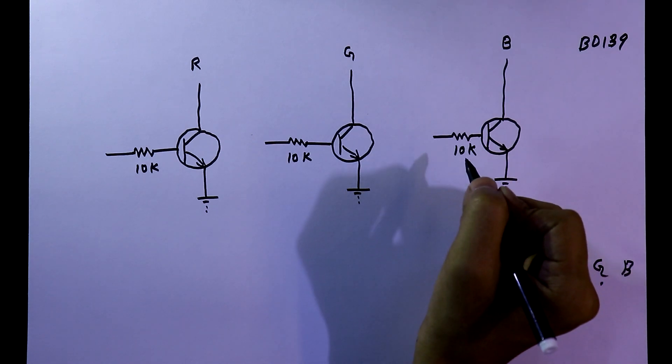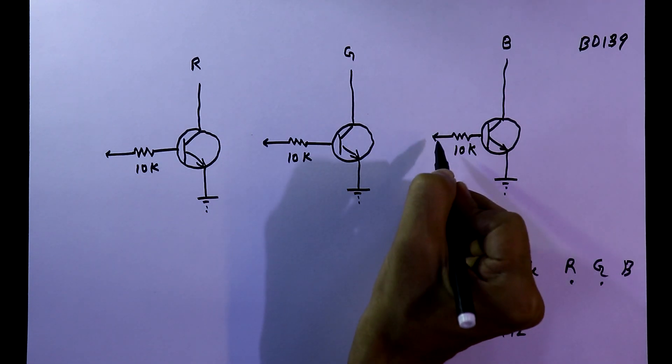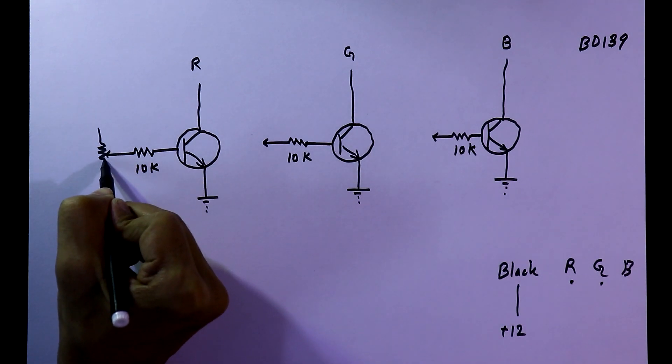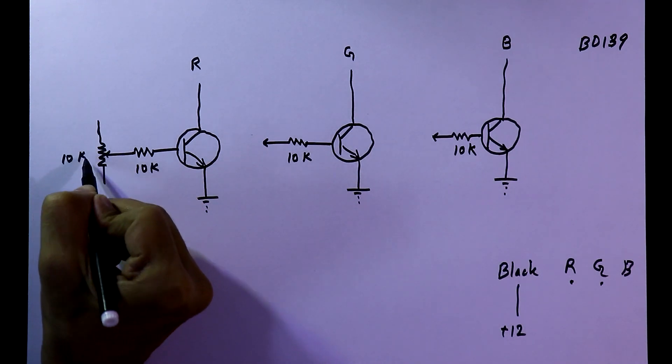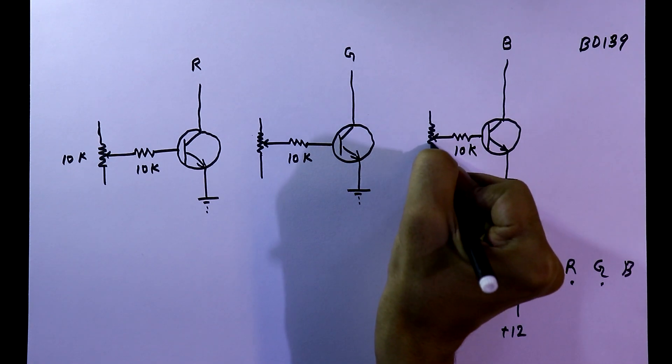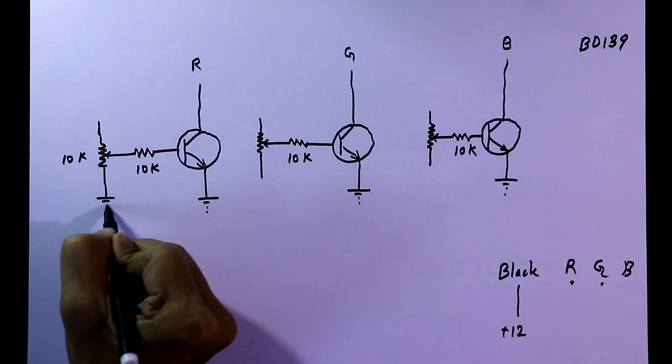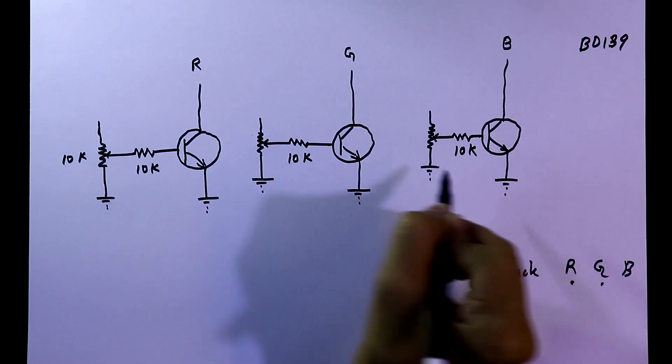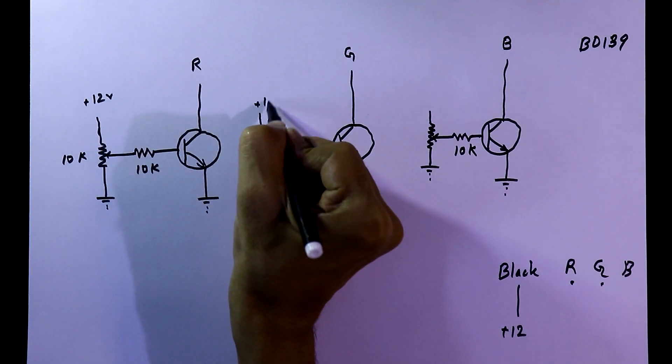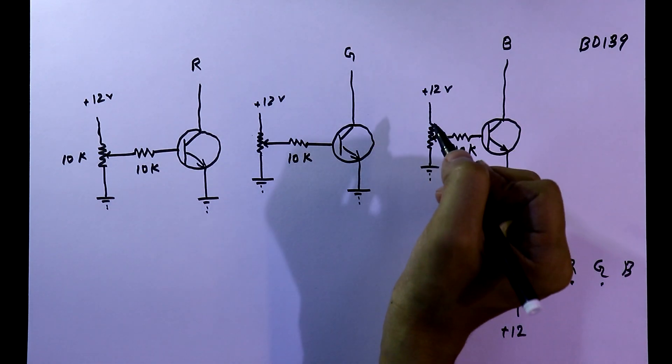This is the middle pin of the potentiometer. The potentiometer value is 10 kilo ohms. One pin of the potentiometer is connected to the ground and another pin is connected to plus 12 volt. This is a very simple circuit.